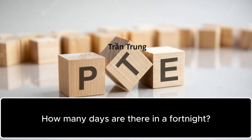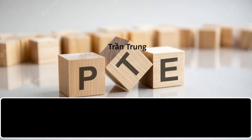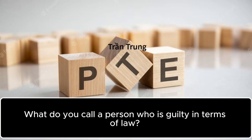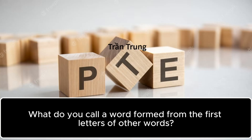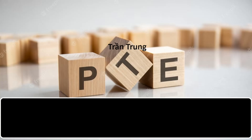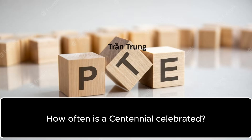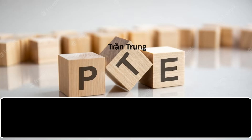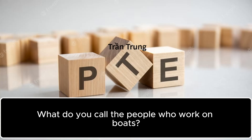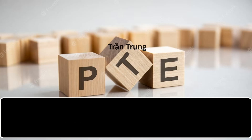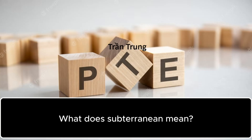How many days are there in a fortnight? 14. What do you call a person who is guilty in terms of law? Convict. What do you call a word formed from the first letters of other words? Acronym. How often is a centennial celebrated? Every 100 years. What do we call a machine which carries people from one floor to another in a high building? Lift. What do you call the people who work on boats? Sailor. What does subterranean mean? Underground.